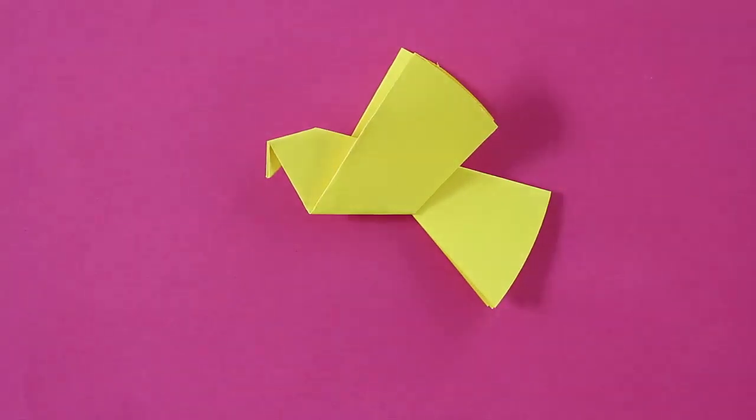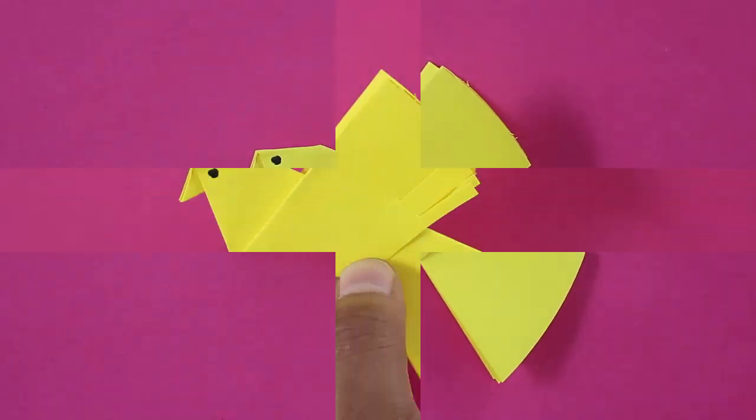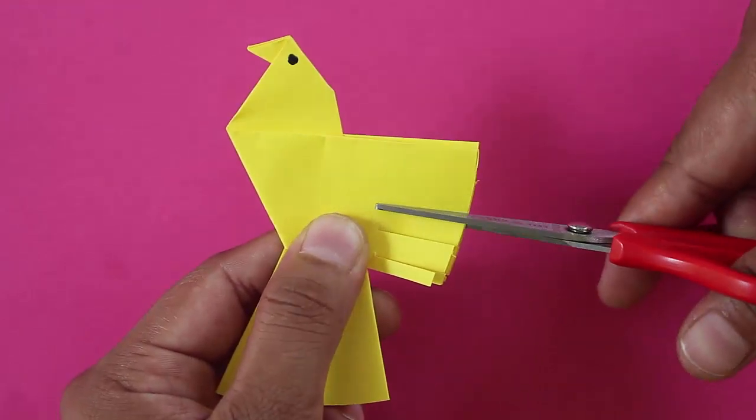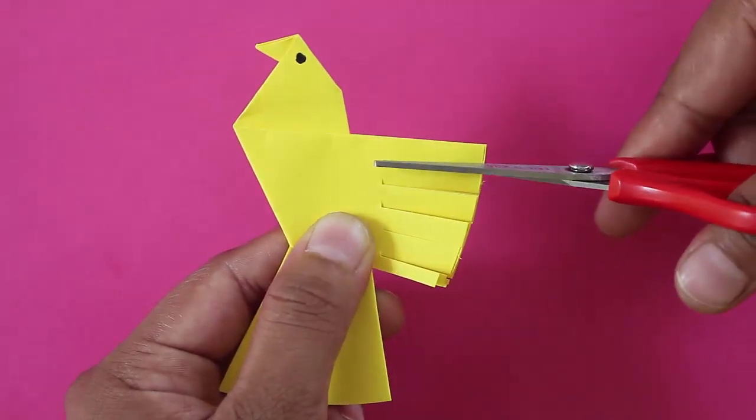Make a black dot to mark the pigeon's eye. Now make parallel cuts on both the horizontal and tail wings to make the pigeon's feathers.